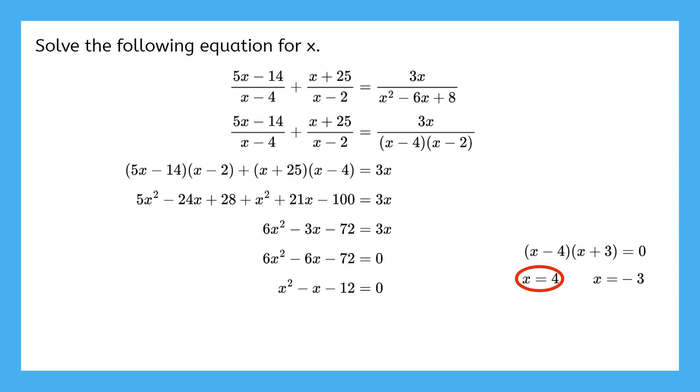We substitute 4 for x into the denominators to check if it's extraneous. 4 minus 4, that's 0! And this is 0 too! So, if any of the denominators are 0, it's an extraneous solution. So, no, 4 is not a solution to this equation. We have to check all our possible solutions because more than one of them can be extraneous. So, let's also check negative 3 in all the denominators. Negative 3 would not make any of these denominators equal to 0, so this is our only solution.